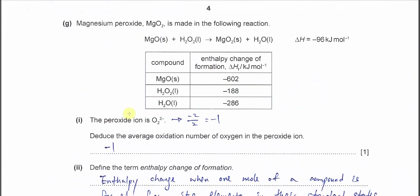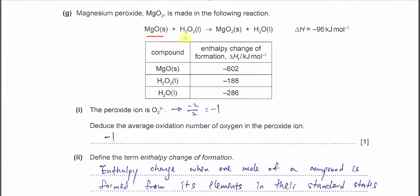Part G: magnesium peroxide is made by the reaction of magnesium oxide with H₂O₂ to form magnesium peroxide and H₂O. ΔH is given as −96 kJ/mol. Part 1: the peroxide ion is O₂²⁻. Deduce the average oxidation number of oxygen. The charge is −2 and there are two oxygens, so −2 ÷ 2 = −1. The answer is −1.